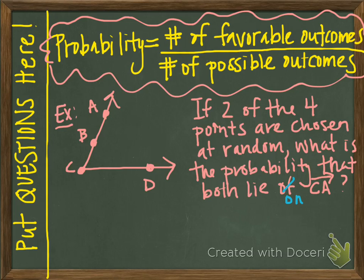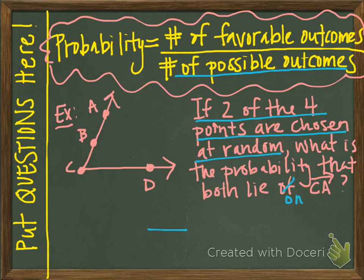A lot of students don't take the time to list all of the possibilities and end up getting these wrong — even really smart students. Please follow these steps to ensure you get them correct. Some students say 'two out of four, that's one half,' or 'three points on one side and two on the other, so three out of four.' The first thing we want to do is list all possible outcomes — the bottom part of our fraction. All possible things that can happen come from the first part of the sentence: if two of the four points are chosen at random.